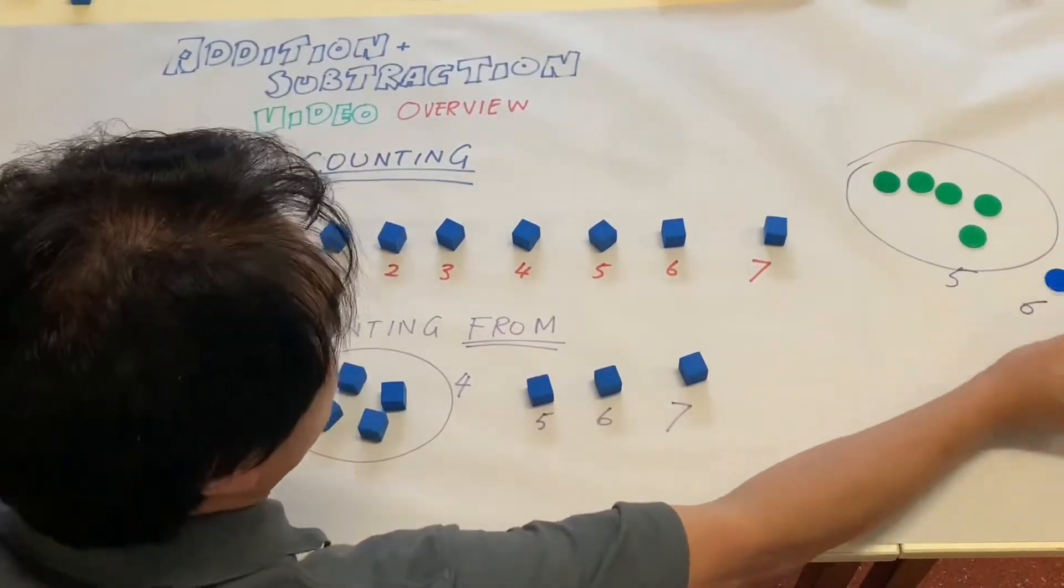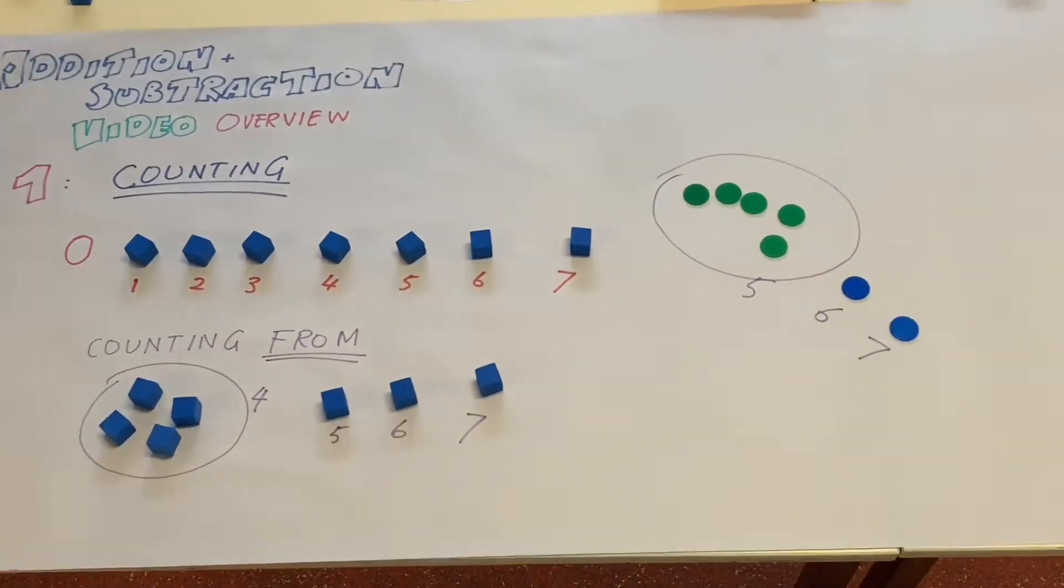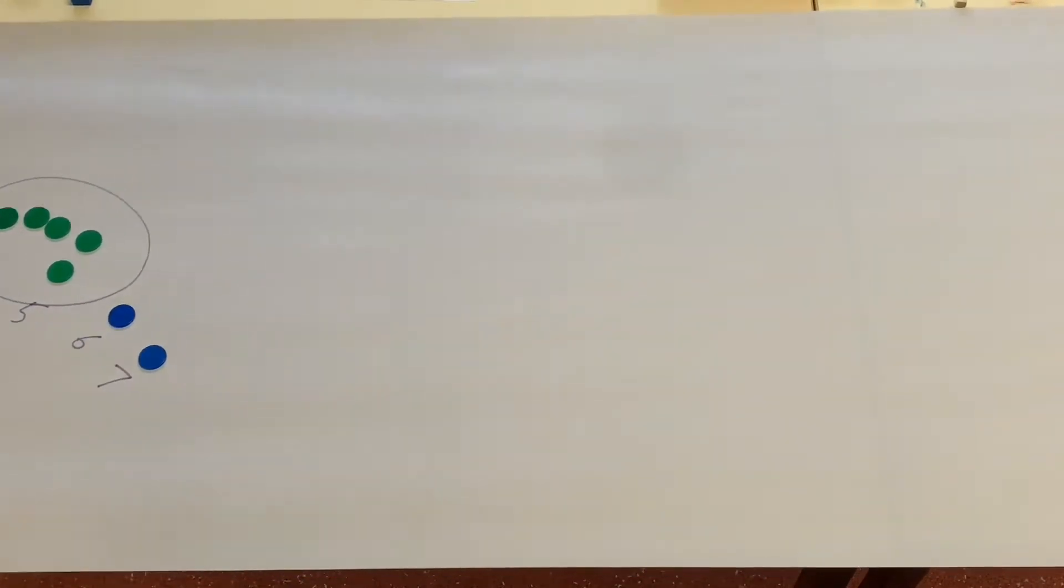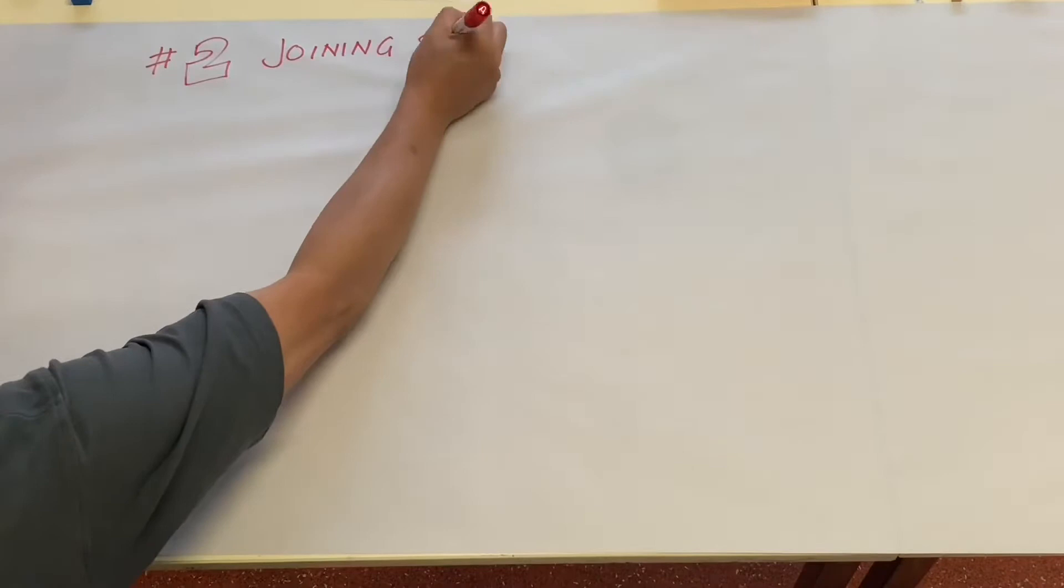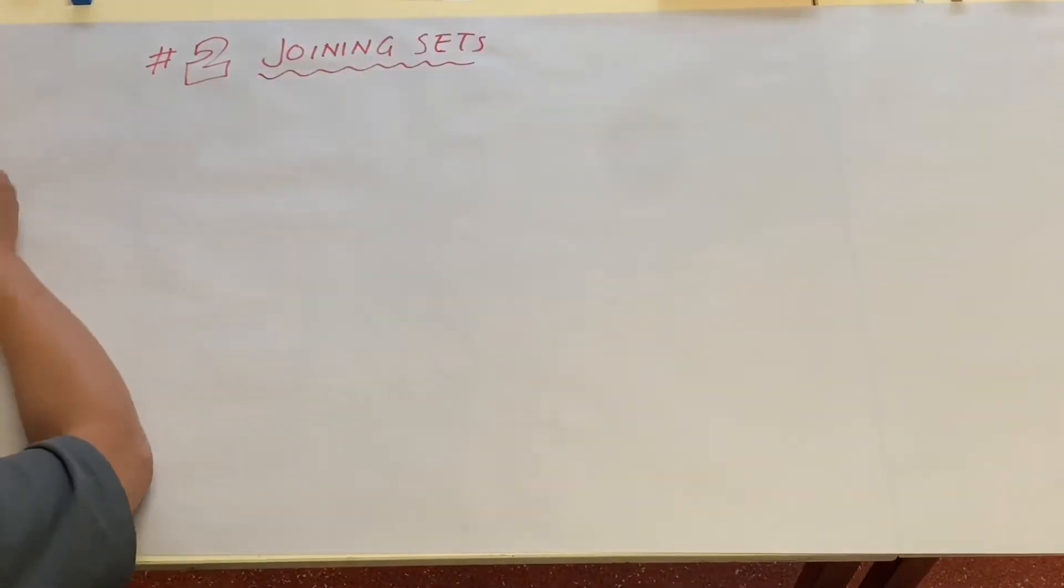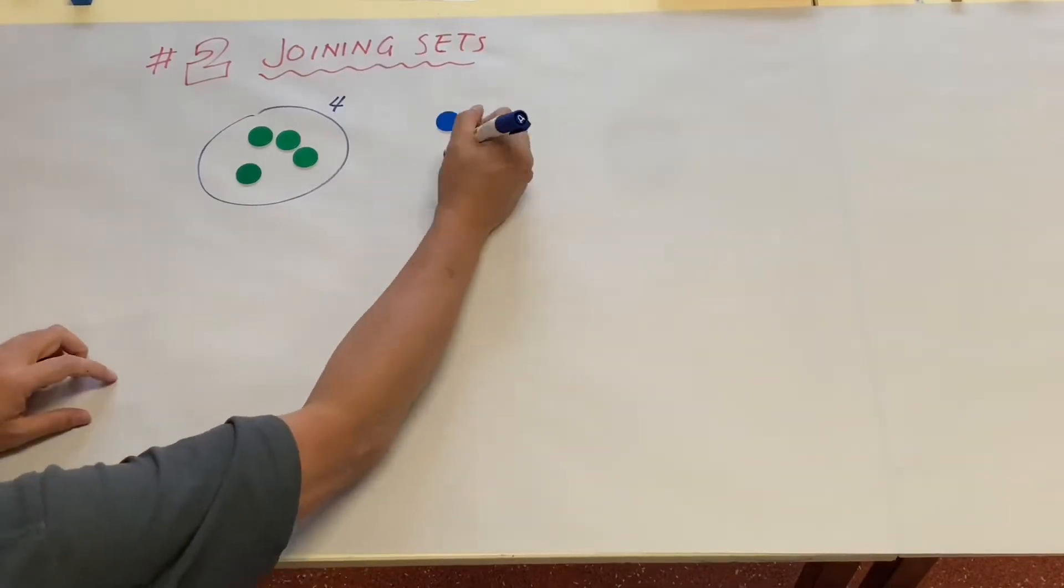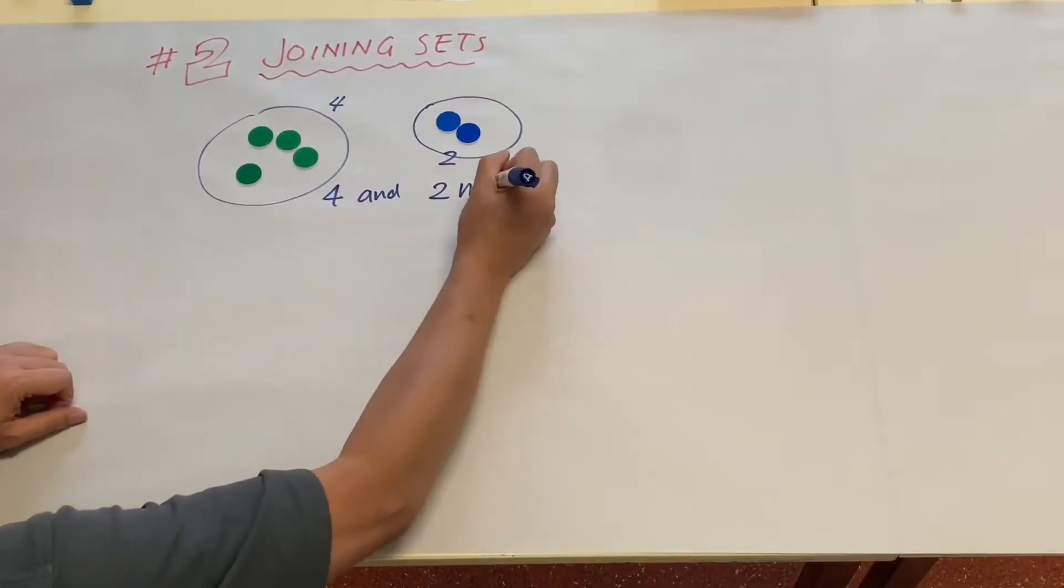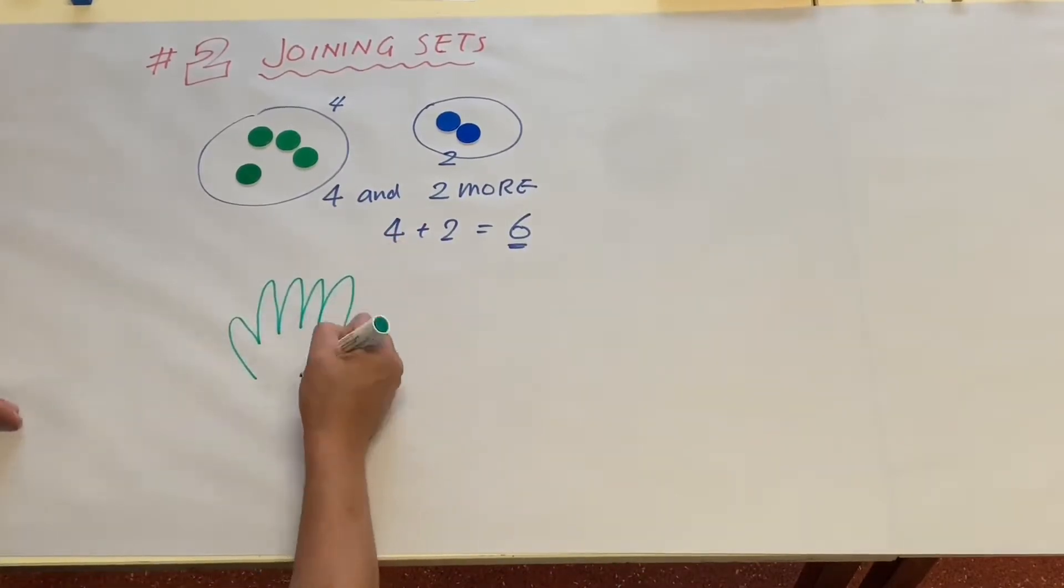If you're counting up from five, from five and six and seven. Video number two, we're going to go through the joining sets. For example, four plus two is four and two more. Four plus two equals six.